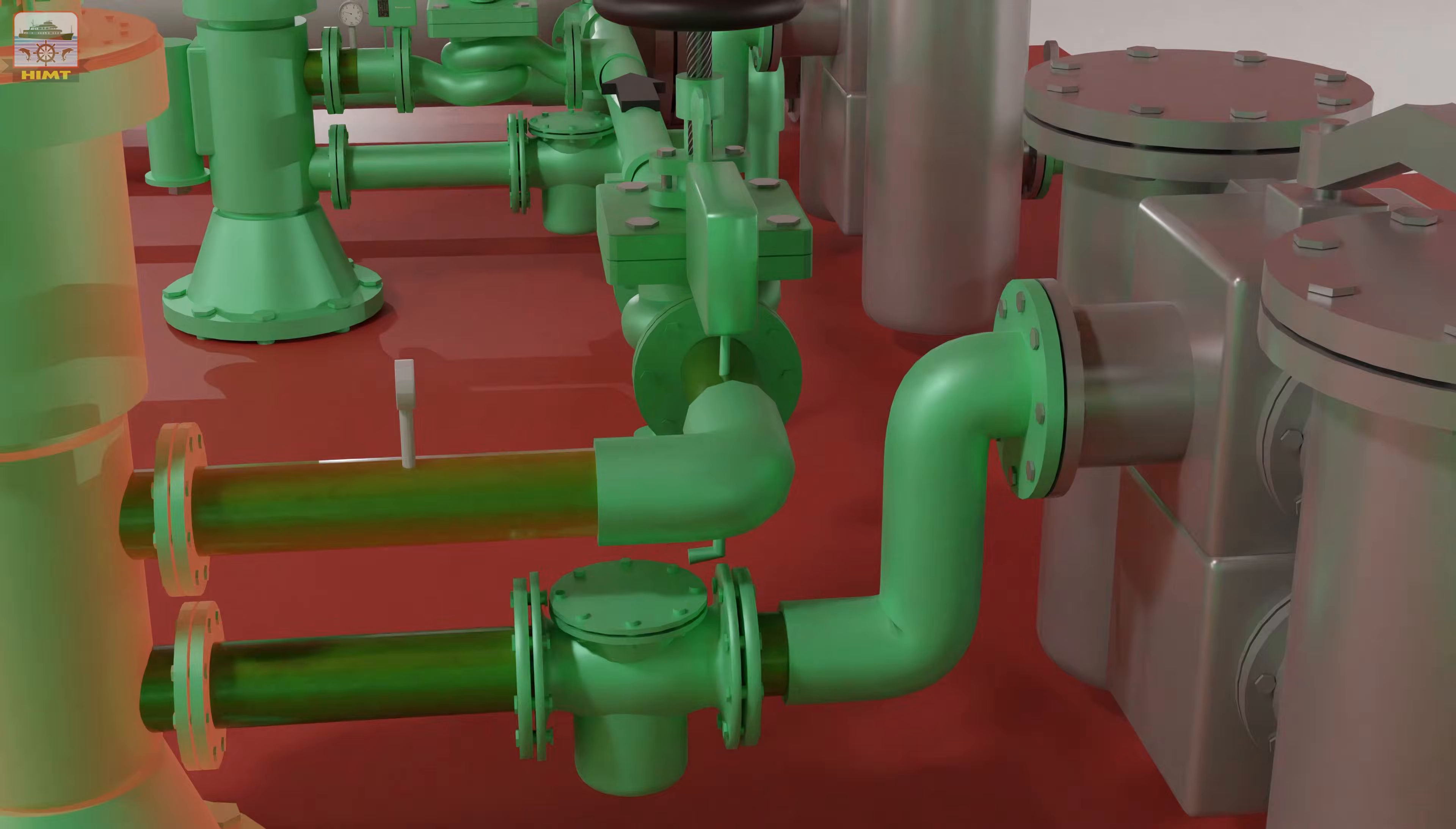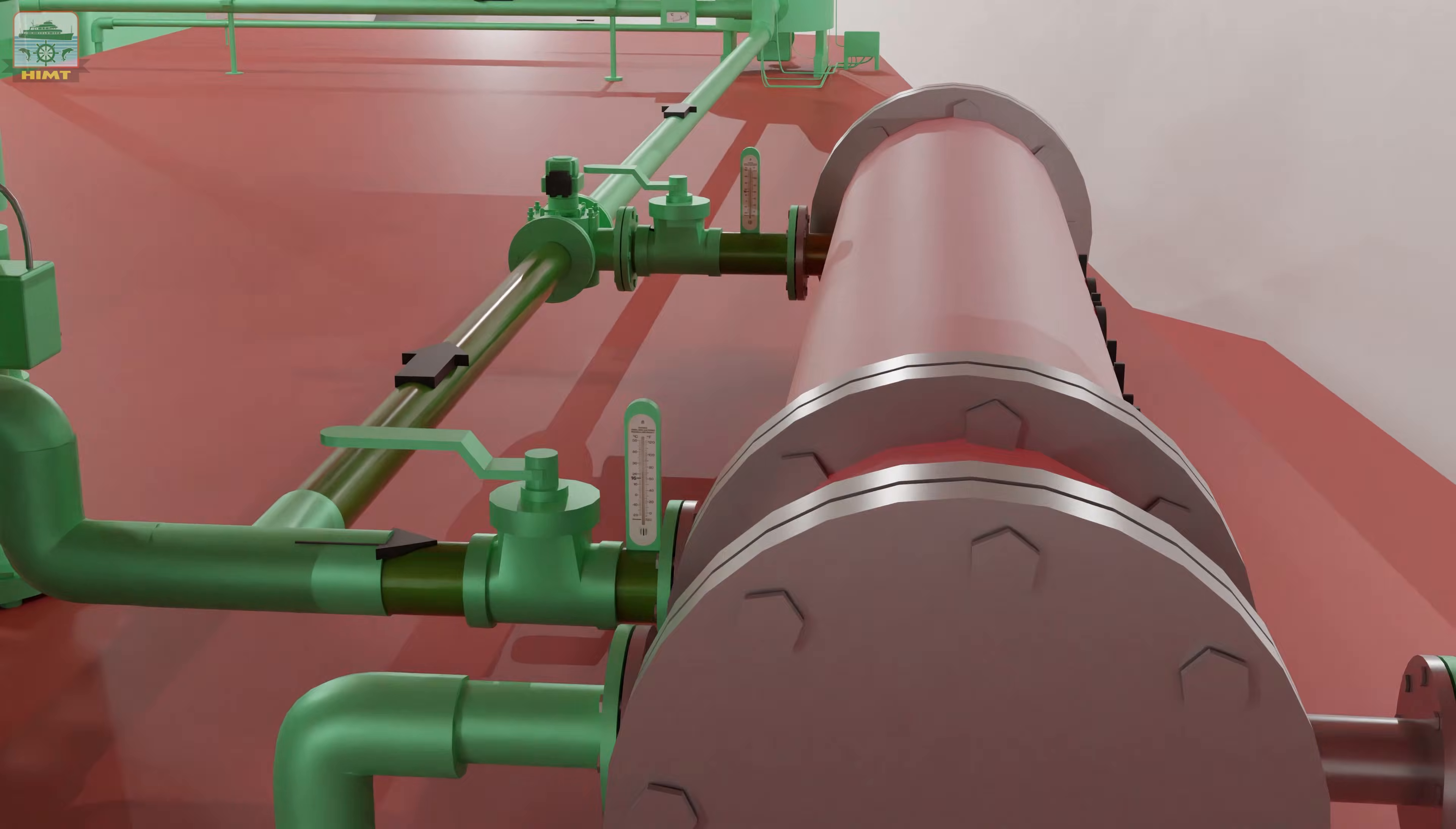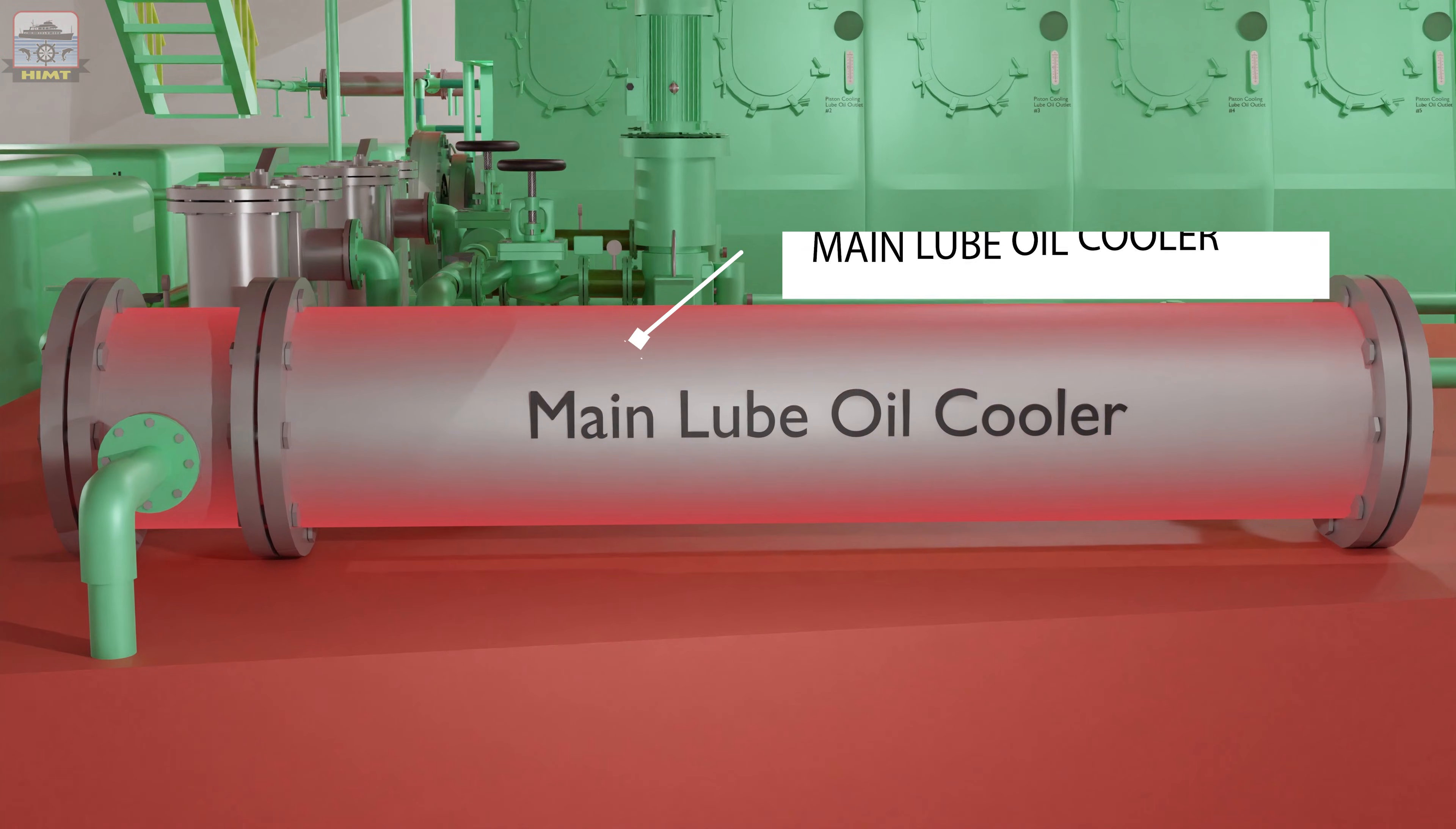The main lube oil pumps take their suction from the main engine sump tank and discharge oil via the main lube oil cooler which takes away the heat. The lube oil cooler can be either shell and tube type or plate type, cooled either by low temperature central cooling freshwater system or by seawater system.